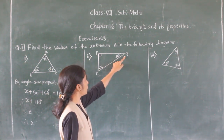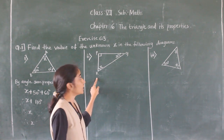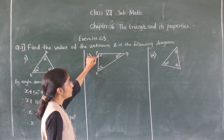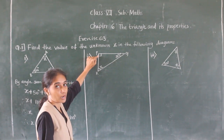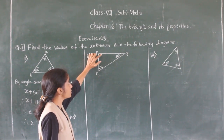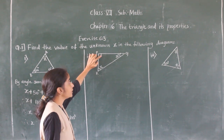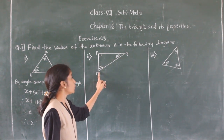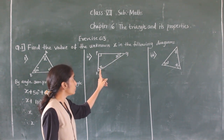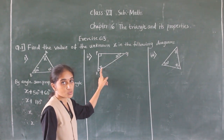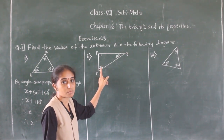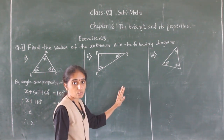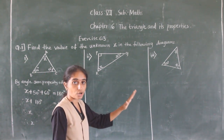Now let's see the next example. In triangle PQR, angle P is 90 degrees — this sign means it is 90 degrees — and angle R is 30 degrees. We have to find the unknown angle X. So again we have to use the same property — the angle sum property of triangle.